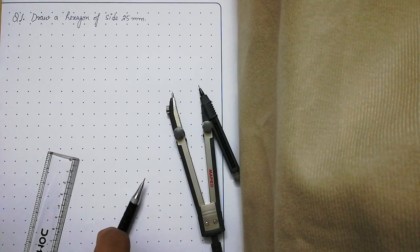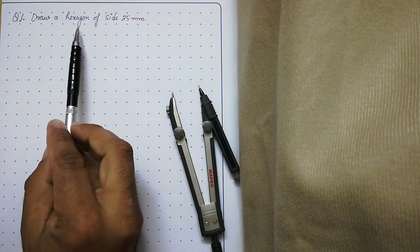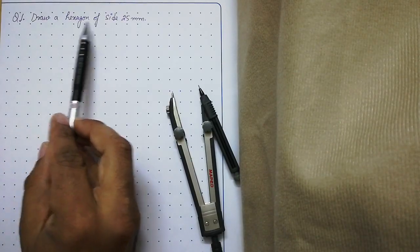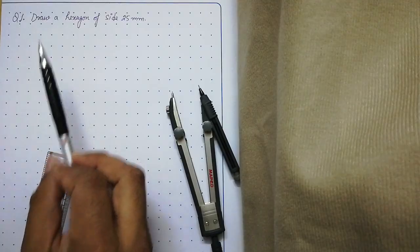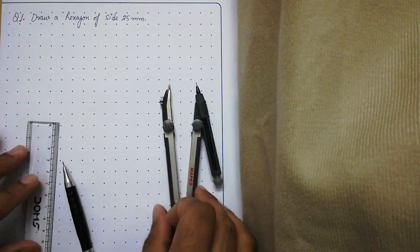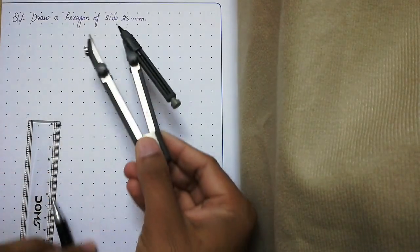Hello students, today we will learn how to draw a hexagon of side 25 millimeters. What is the procedure? You need to open your compass equal to the side of the hexagon.